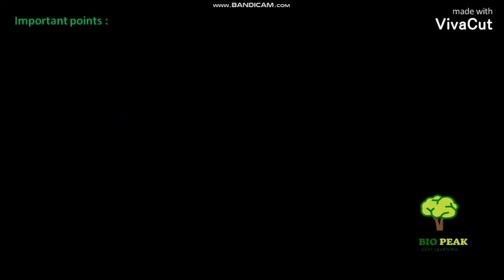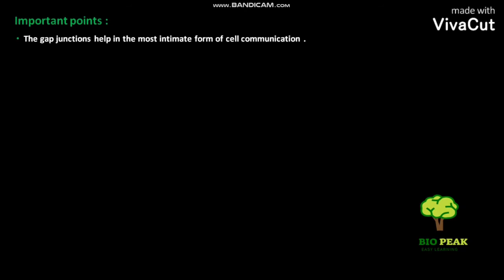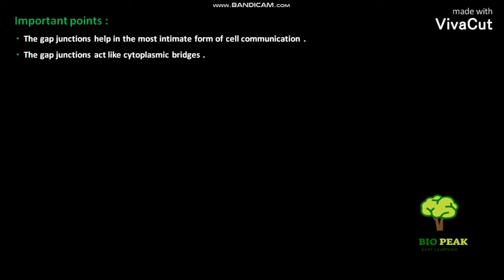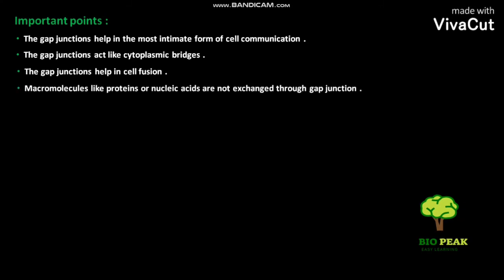Now some important points. The gap junctions help in the most intimate form of cell communication. The gap junctions act like cytoplasmic bridges and help in cell fusion. Macromolecules like proteins, nucleic acids, and polysaccharides are not exchanged through gap junctions.